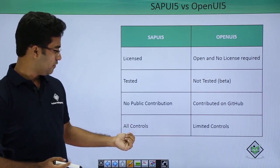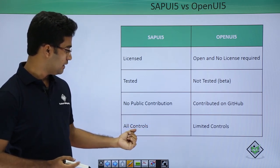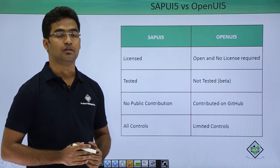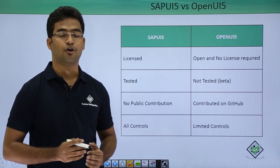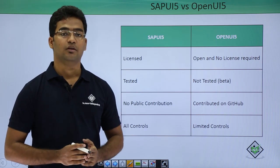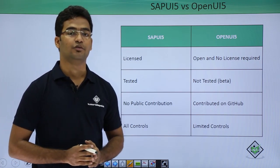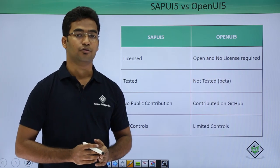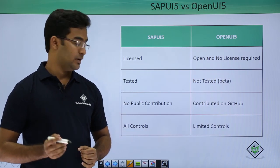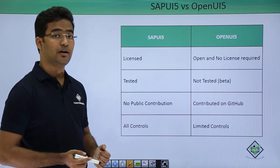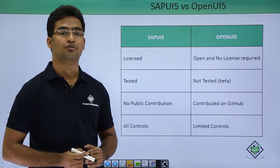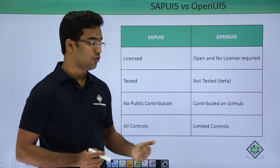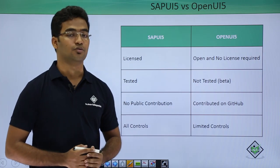Another difference is that SAPUI5 supports all features — it supports more than 500 controls — but OpenUI5 has limited controls only. For example, SAPUI5 supports the VIZ control (the chart control), but OpenUI5 does not support the VIZ control.